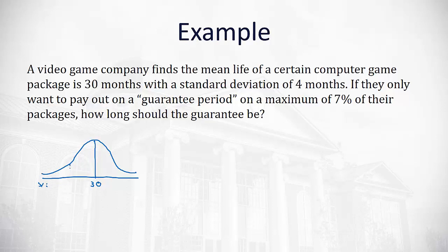We want the guarantee period to be 7%. These are x values. We want the guarantee period to be 7%. That's less than half the shaded area down here, 0.07 is the area or the probability we pay out on that guarantee.